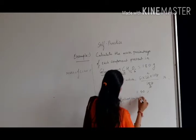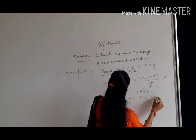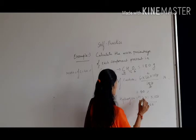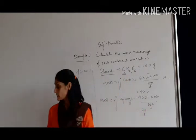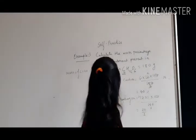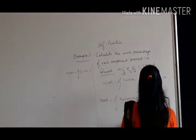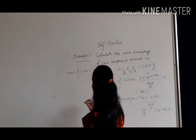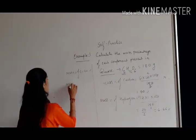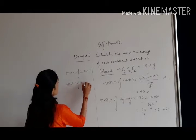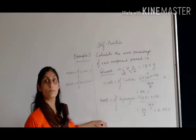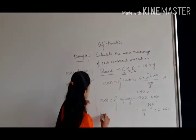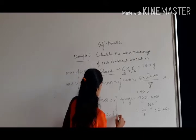Now secondly we find out the mass percentage of hydrogen. That is equal to 12 into 1 into 100 upon 180. So we get 1200 upon 180, and the mass percentage of hydrogen comes out to approximately 6.67 percent.